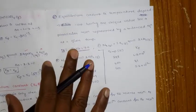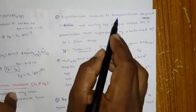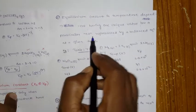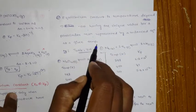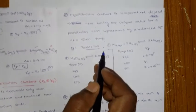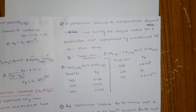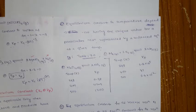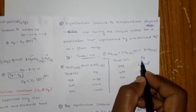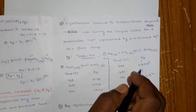The equilibrium constant is temperature dependent and has one unique value for a particular reaction at a given temperature. For every reaction there will be an equilibrium constant, and that equilibrium constant varies with temperature. For every temperature, there will be a unique equilibrium constant.